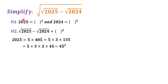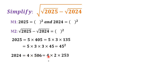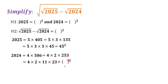Now we check 2024. So 2024 equals 4 times 506, then 4 times 2 times 253, then 4 times 2 times 11 times 23. Looking at this factorization, this number cannot be written as something squared. That means 2024 cannot be written as a perfect square, so method one doesn't work. We have to try method two.